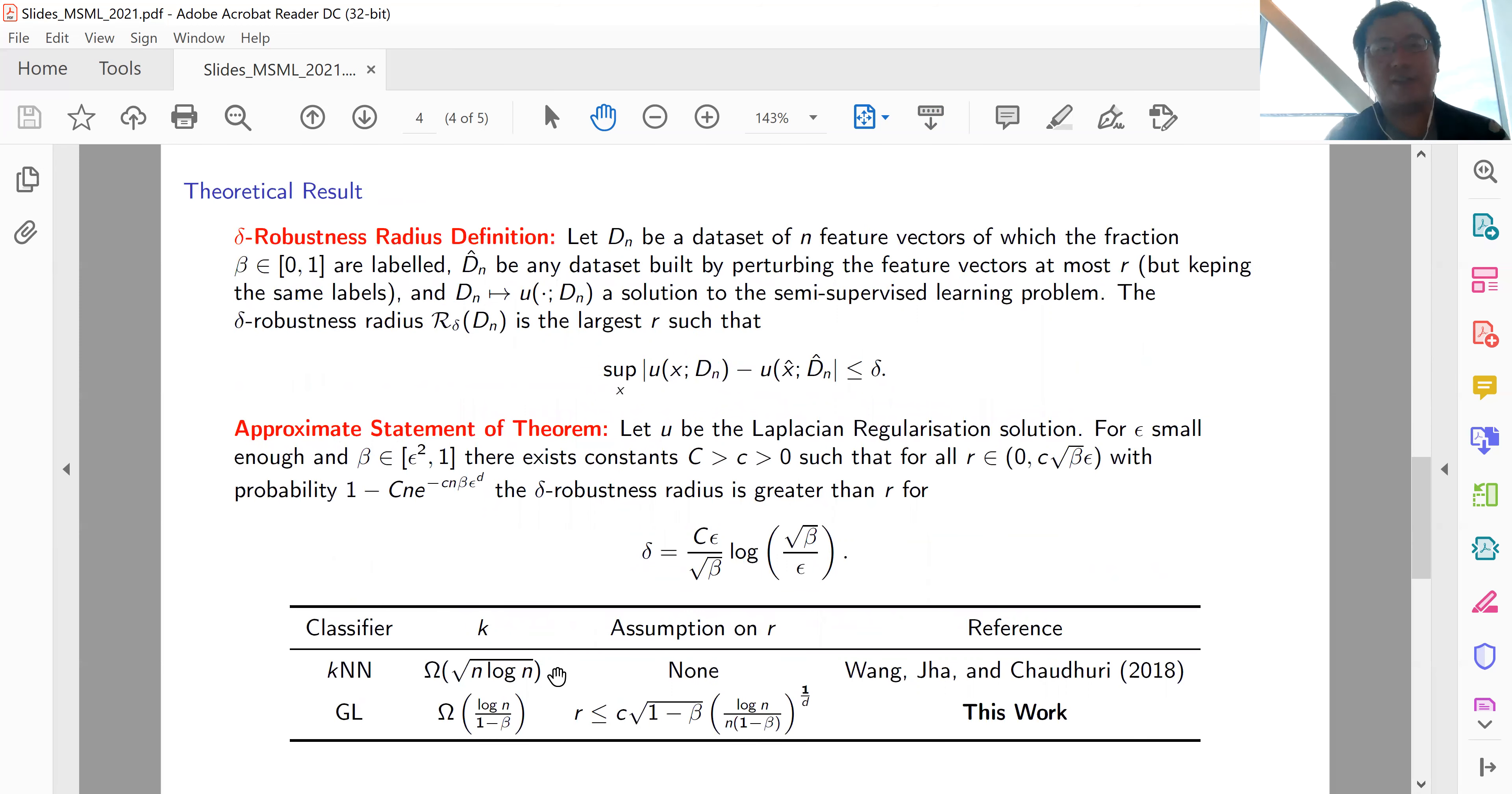We have the following theoretical results. First, we define the δ-robustness radius. Let D_n be a dataset of n feature vectors of which a fraction β are labeled, and D̂_n be the perturbed dataset where the perturbation is at most δ in the L2 norm sense. Then we can show that the supremum of |u(x) - û(x)| is less than δ. This δ is called the robust radius. With this definition, we can prove the following result.